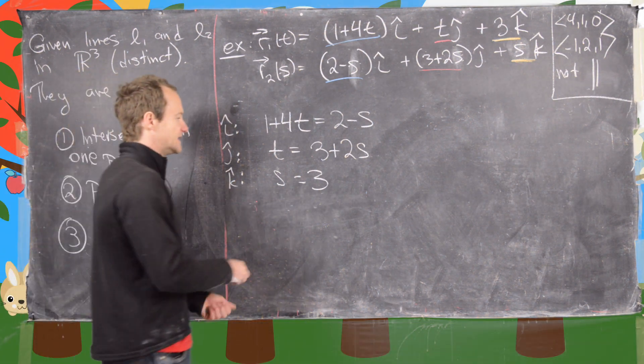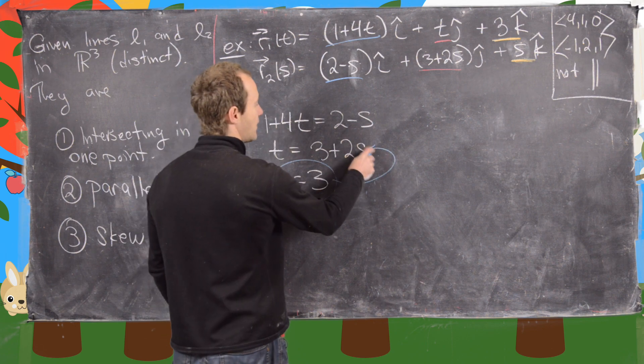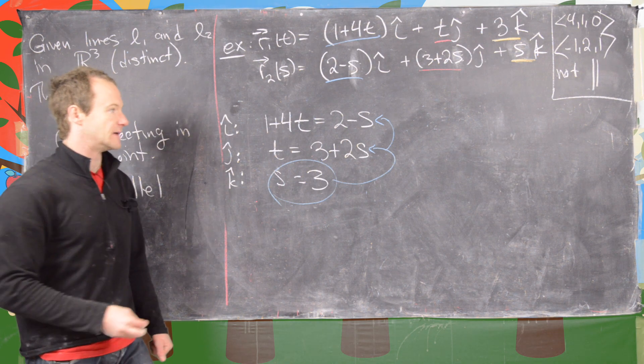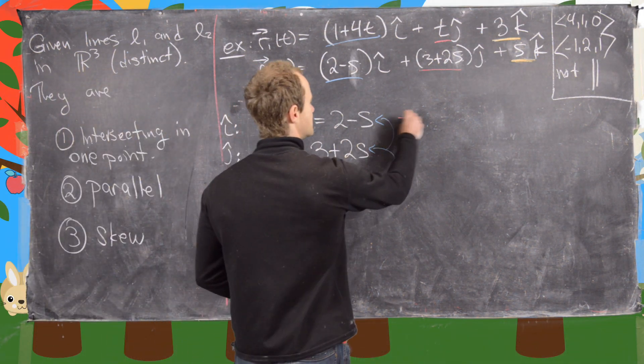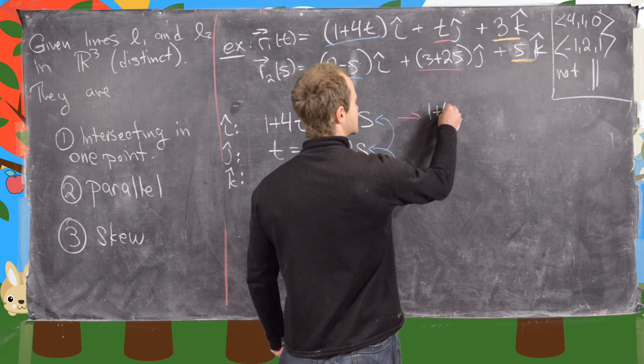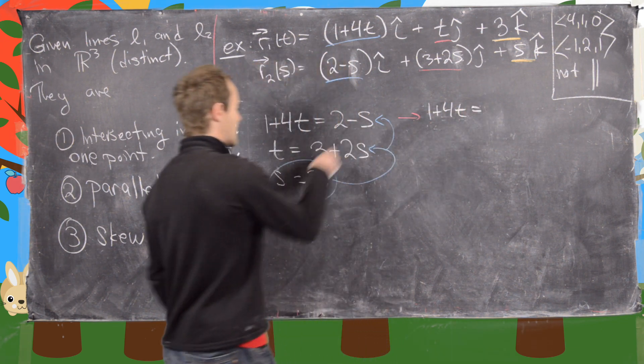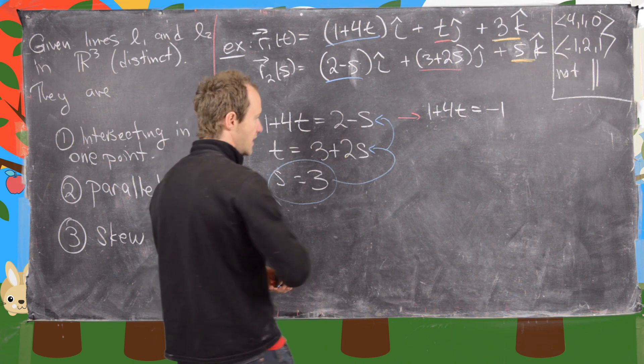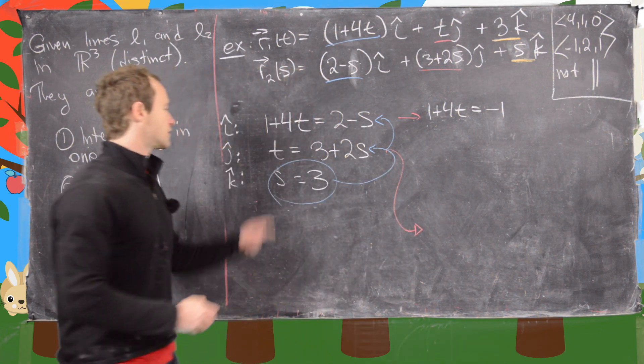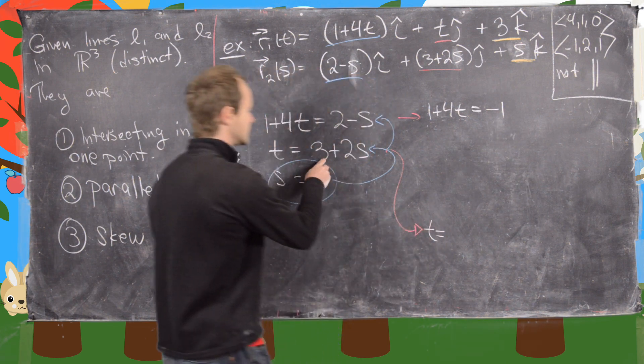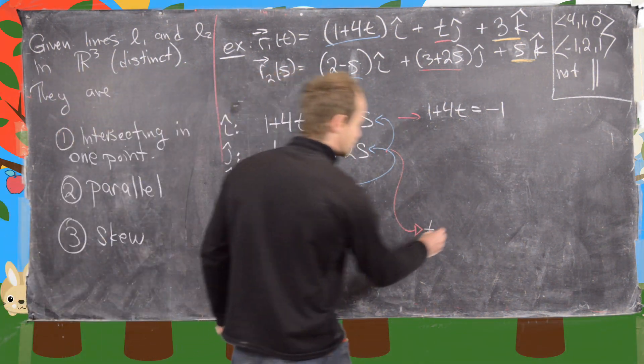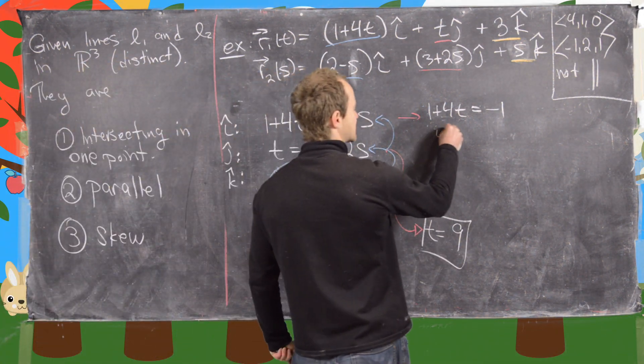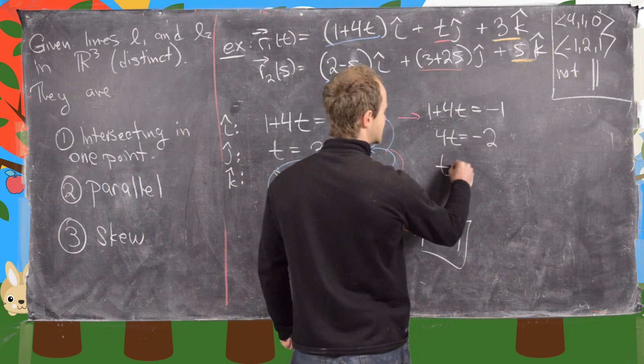Now we can take this value of s and plug it into each of these equations, giving us two equations that we can solve for t. This first one becomes 1 plus 4t equals 2 minus 3, which is -1. The second one is t equals 3 plus 2(3), which is 9. So we've got t equals 9. But notice if we subtract 1 from this we get 4t equals -2, which makes t equal -1/2.